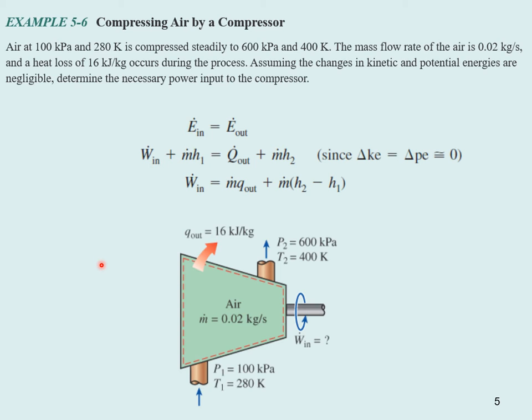Let's look at a compressor example. Air at 100 kilopascals and 280K is compressed steadily to 600 kilopascals and 400K. The mass flow of the air is 0.02 kilograms per second. Heat loss of 16 kilojoules per kilogram occurs during this process. Assuming changes to kinetic and potential energies are negligible, determine the necessary power input to the compressor. This is a steady flow device, so energy in equals energy out. We have work in, the work to spin the shaft of the compressor, plus M dot H1. This equals Q dot out, the heat loss, plus M dot times H2.